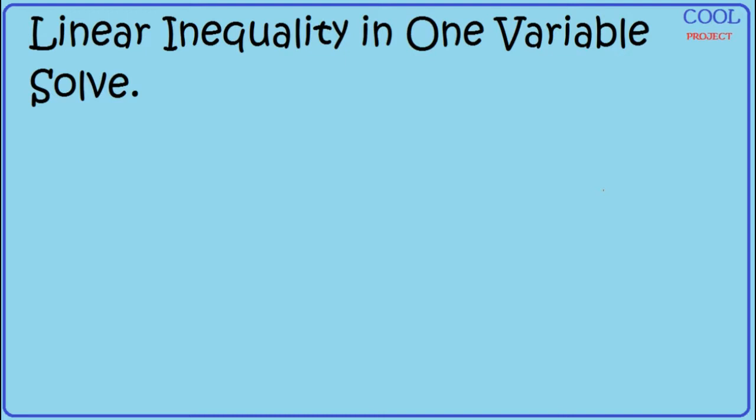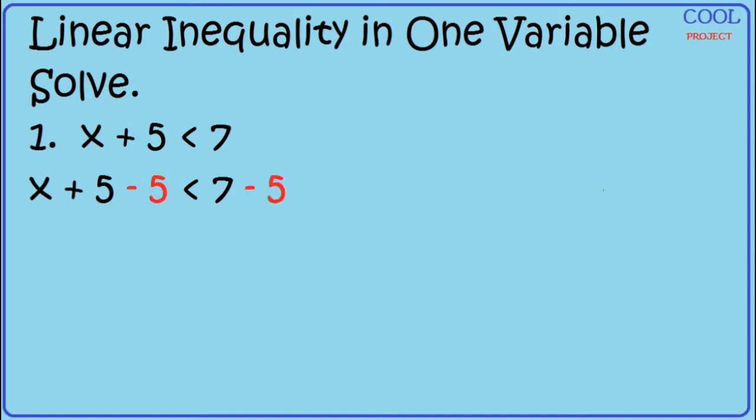Solve. Number 1: x plus 5 is less than 7. To isolate x, subtract 5 on both sides of the inequality. Simplify. x is less than 2.